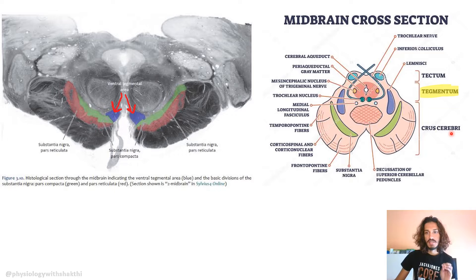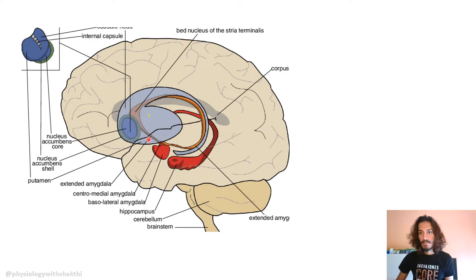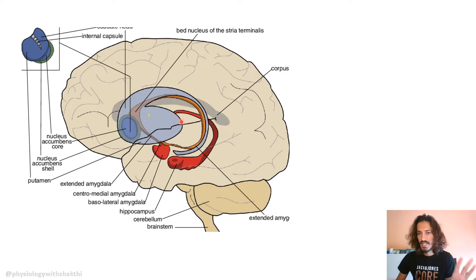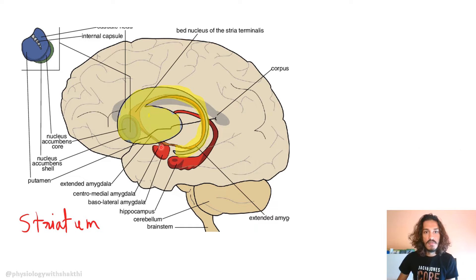From this ventral tegmental area, there are projections that go to parts of the striatum. The striatum is part of your basal ganglia — you have the putamen, the caudate nucleus, the globus pallidus, and related structures. There's the neostriatum, corpus striatum, and so on. The ventral part of the striatum is where your nucleus accumbens is located.